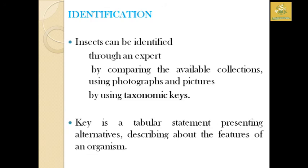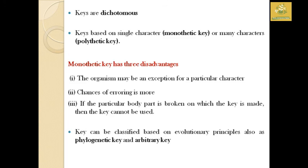Insects are identified through experts, by comparing available collections, using photographs and pictures, and by using taxonomy keys. A key is a table of statements presenting alternatives and describing features of a particular organism. Keys are said to be dichotomous. When a single character is used, it is a monothetic key; when many characters are used, it is a polythetic key. The monothetic key has three disadvantages: the organism may be an exception for a particular character, the chance of error is more, and if the body part on which the key is based is broken, the key cannot be used.